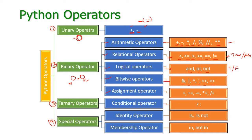The next one is assignment operators. We use these for assigning a value to an operand. We are having equal to, plus equal to, minus equal to, multiplication equal to, and divide equal to. These are the assignment operators in Python.